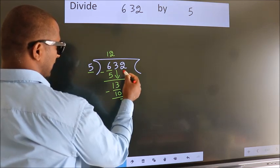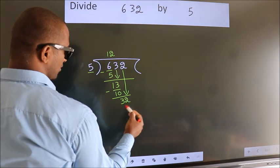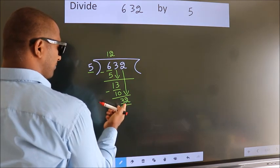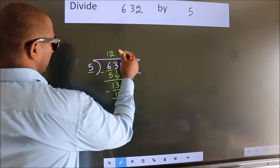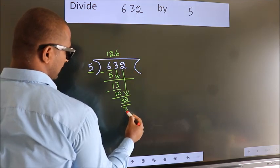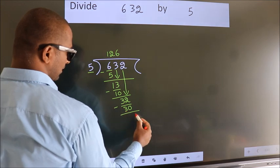After this, bring down the beside number. So 2 down, so 32. A number close to 32 in 5 table is 5 6 30. Now we subtract. We get 2.